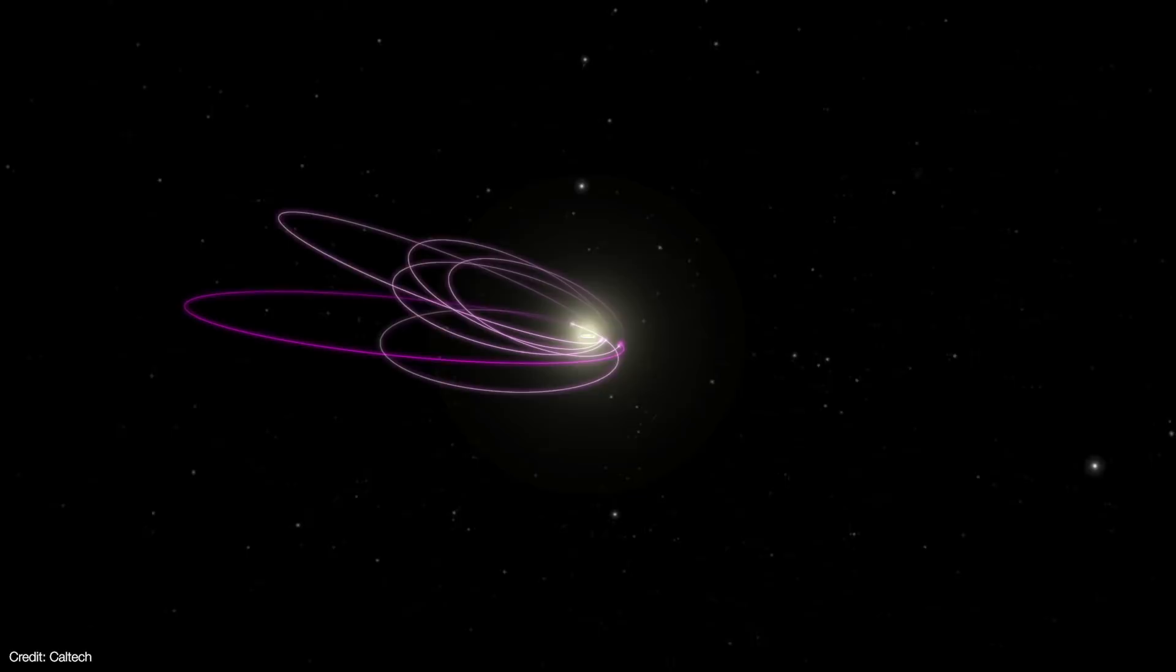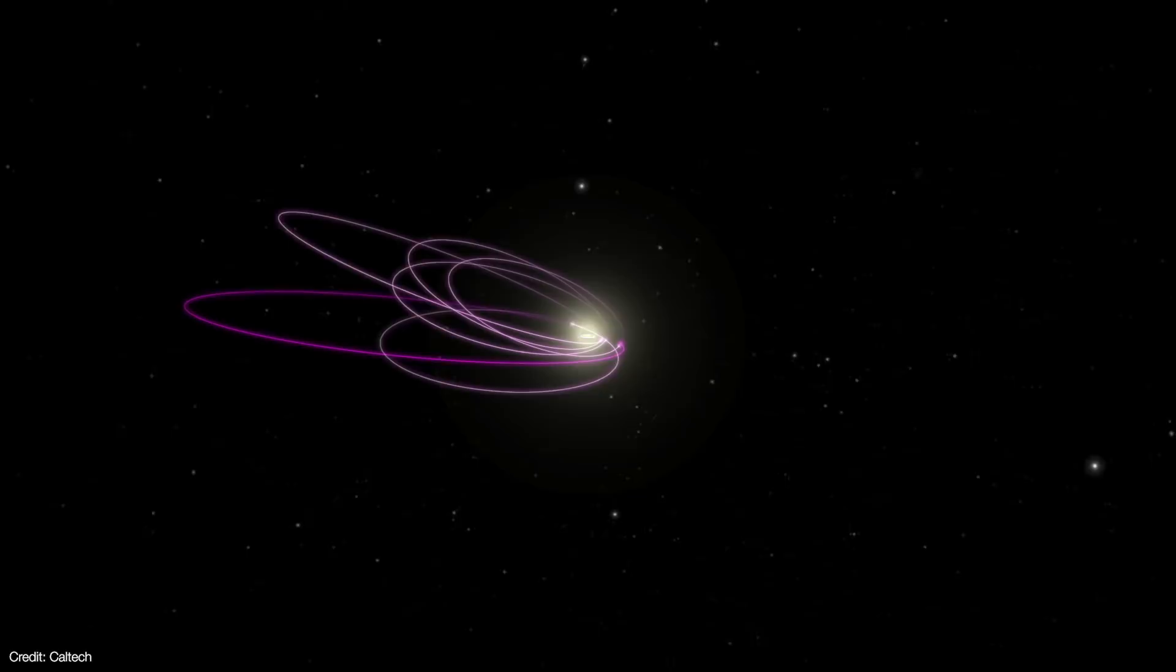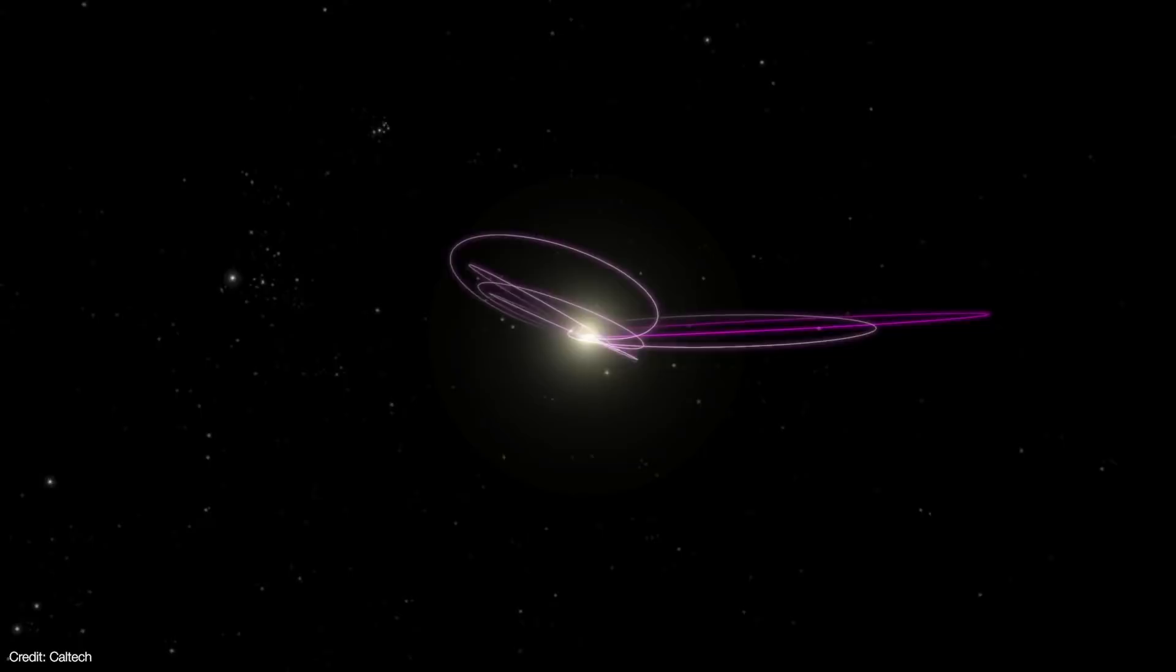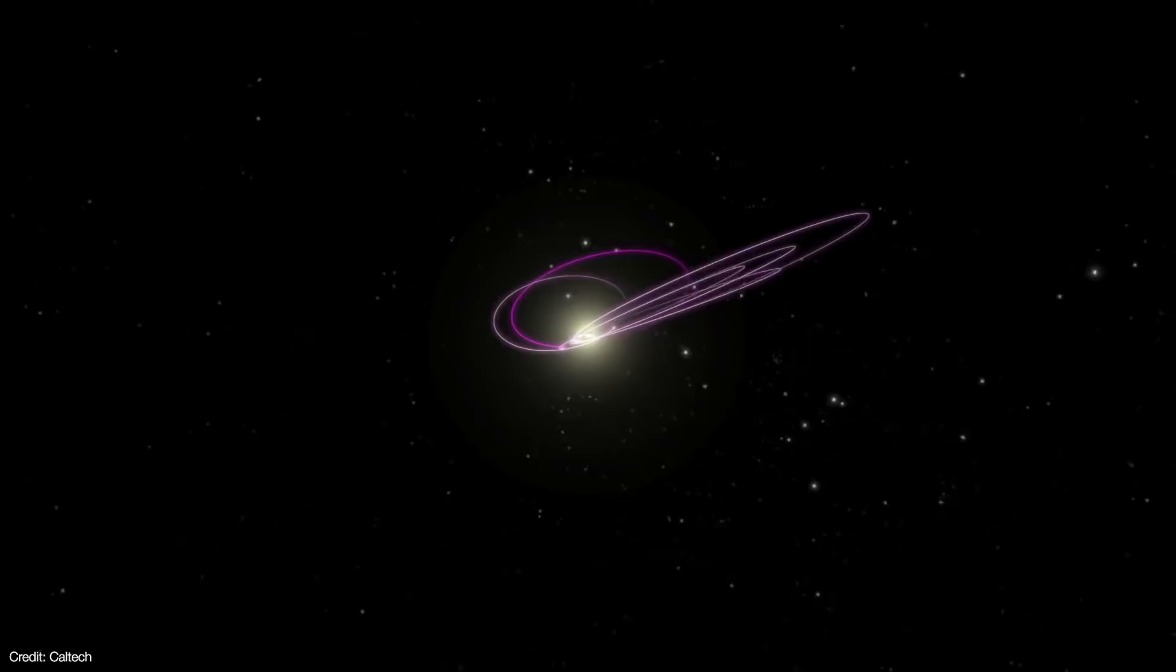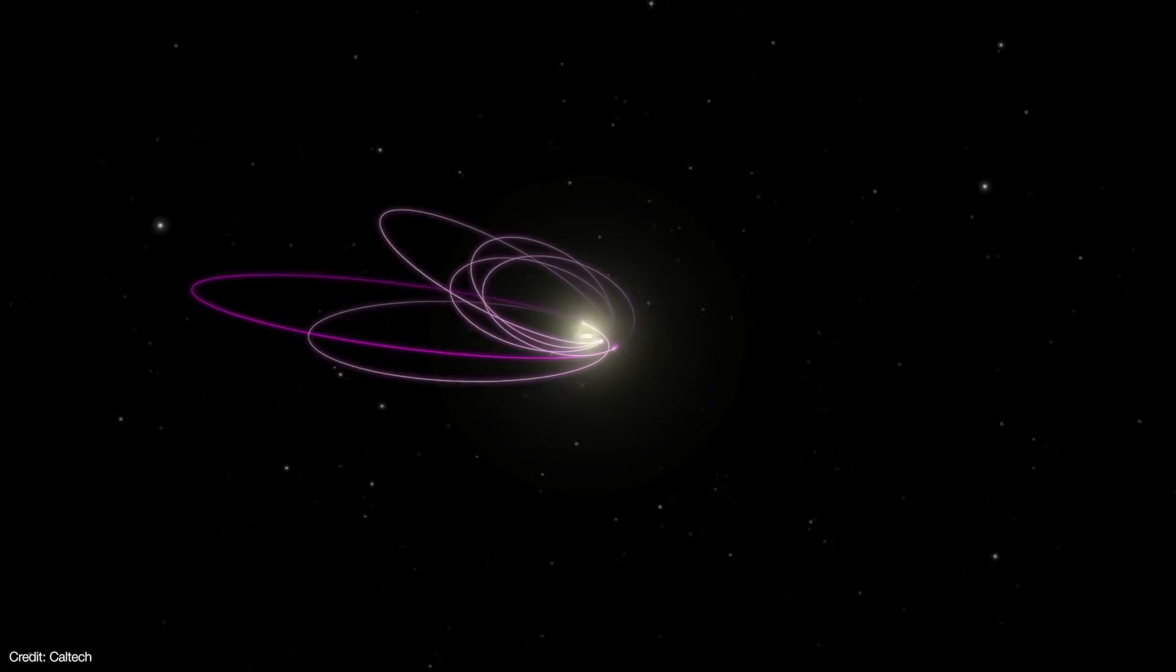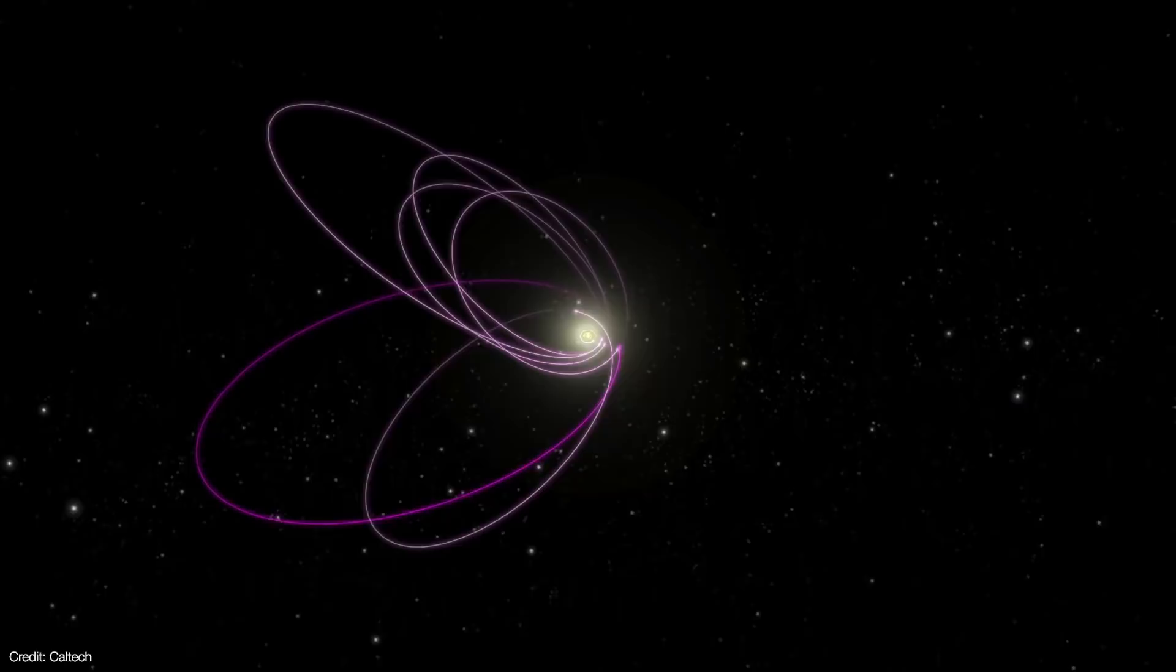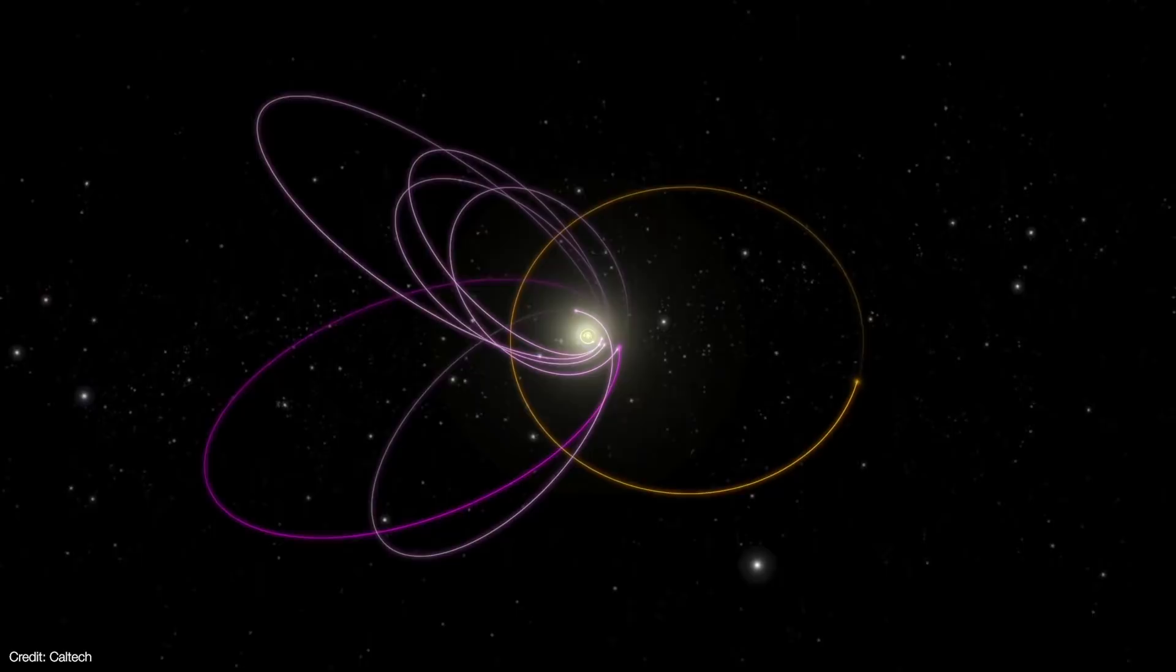All of these objects are on detached orbits from the rest of the solar system. That means they don't feel any gravitational disturbance from the rest of the planets. They're all aligned in roughly the same direction and seem to be in the same inclined plane with respect to the rest of the planets. Astronomers realized that a planet with a mass between 5 and 10 times that of Earth orbiting in the opposite direction would have shepherded these objects into their present-day orbit.